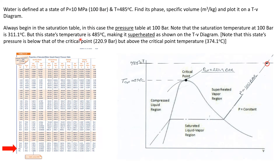We begin in the saturation table. I'll use the pressure table because I'll certainly find 100 bar there. Here are the properties of saturated water organized by pressure. Coming down to 100 bar, the saturated temperature is 311.1 degrees C. Now 100 bar is below the critical point pressure of 220.9 bar, so I plot this pressure line below 220.9 bar, passing through the vapor dome — horizontal under the dome, then up to the right. I'll call that the 100 bar line.